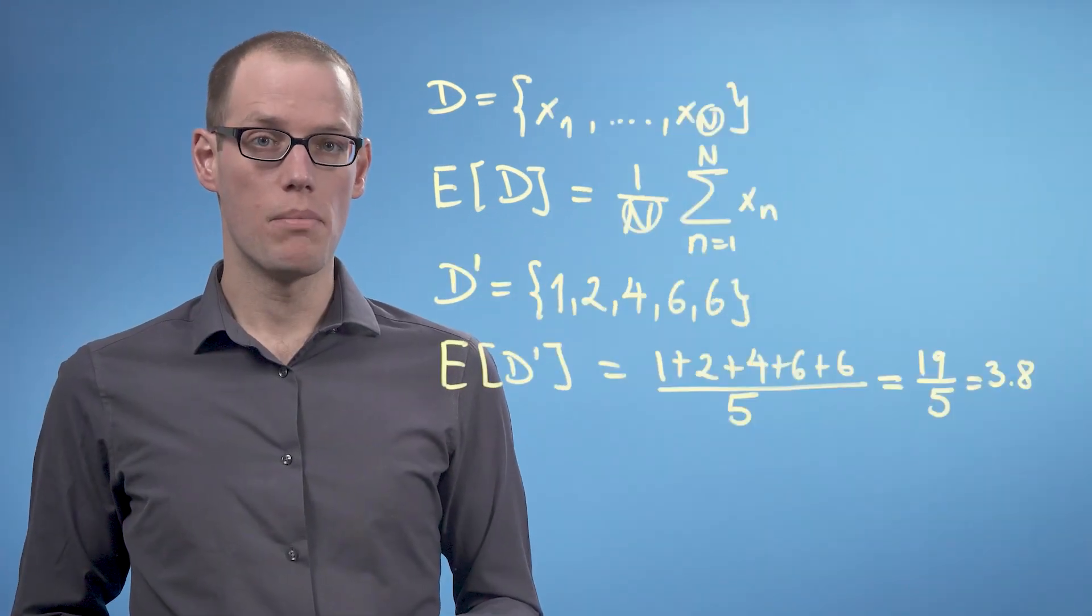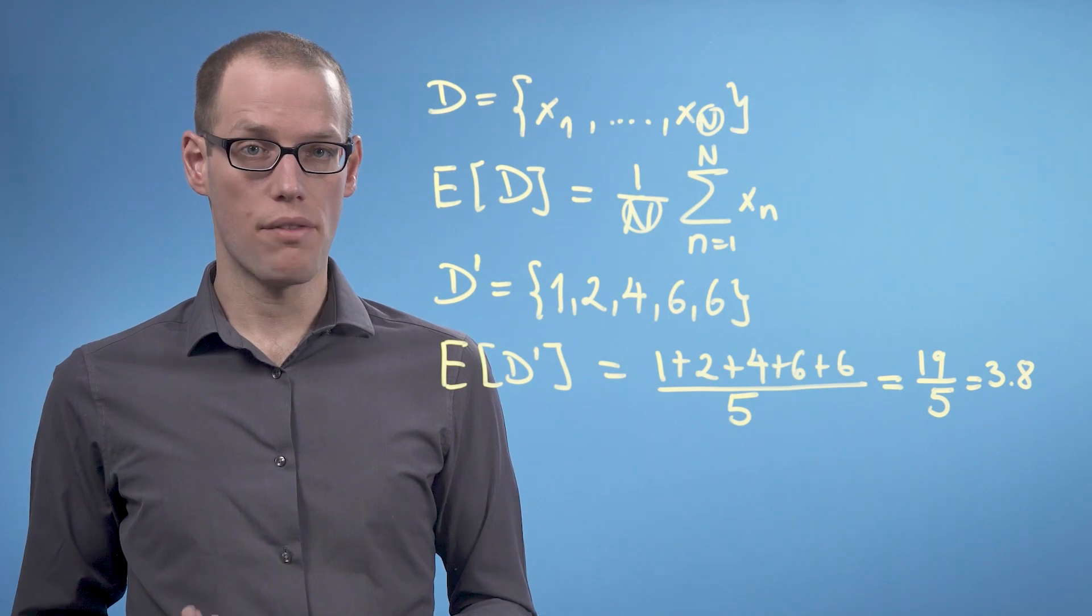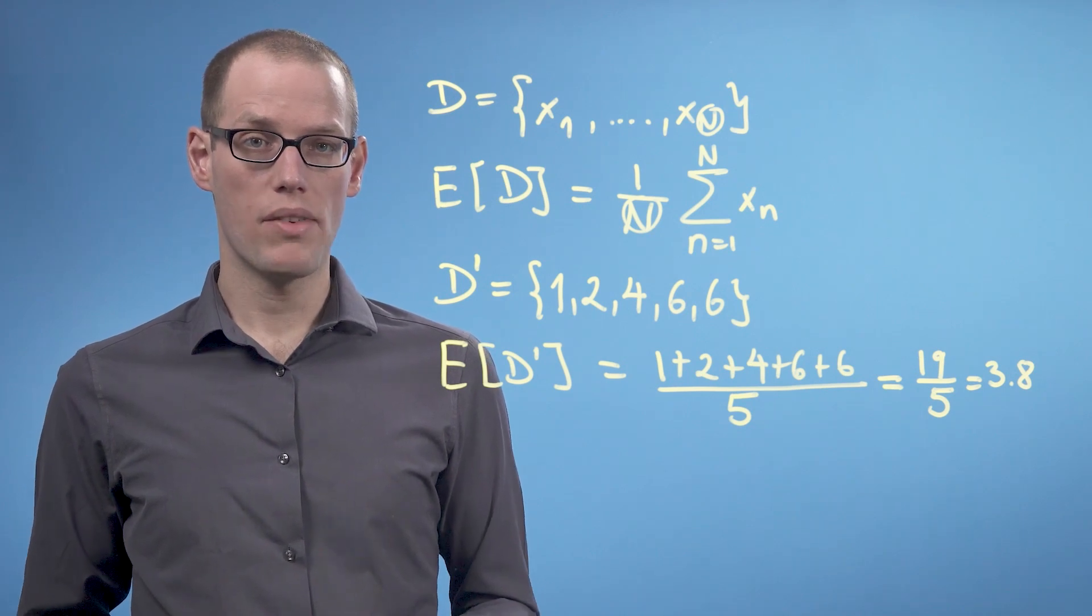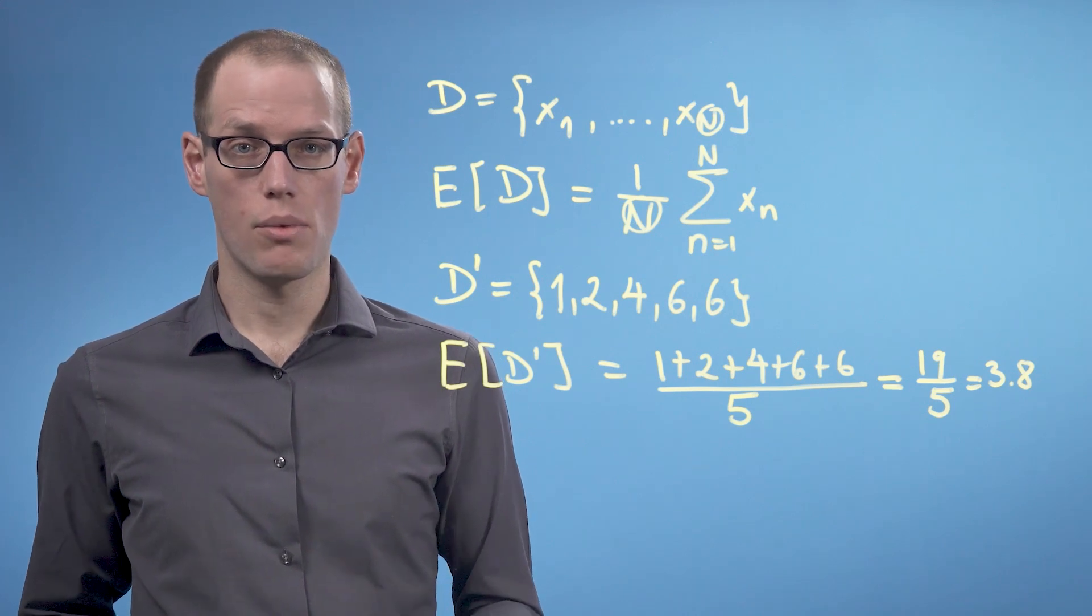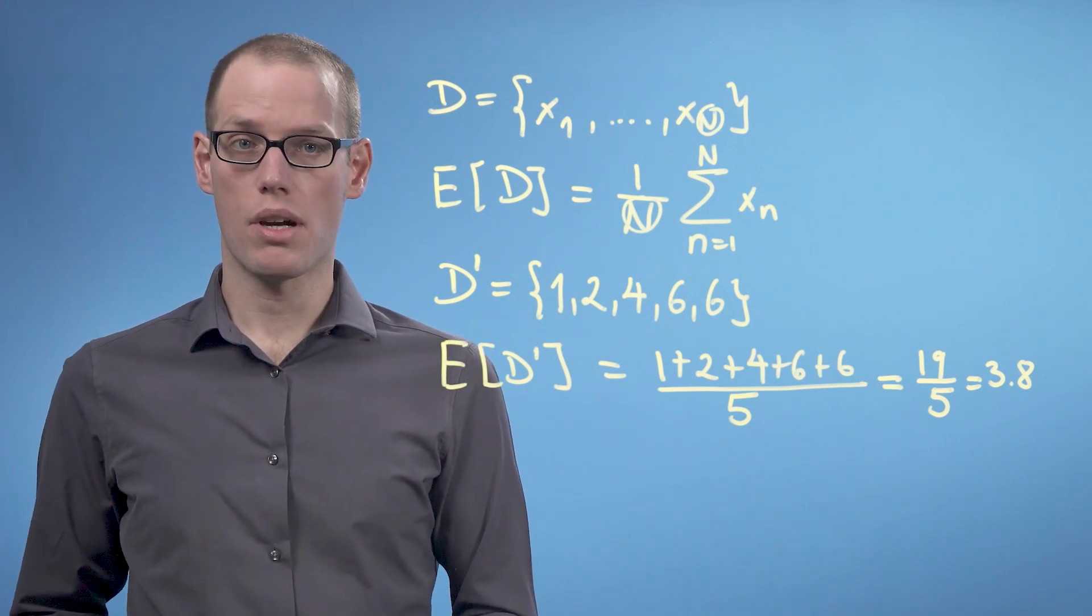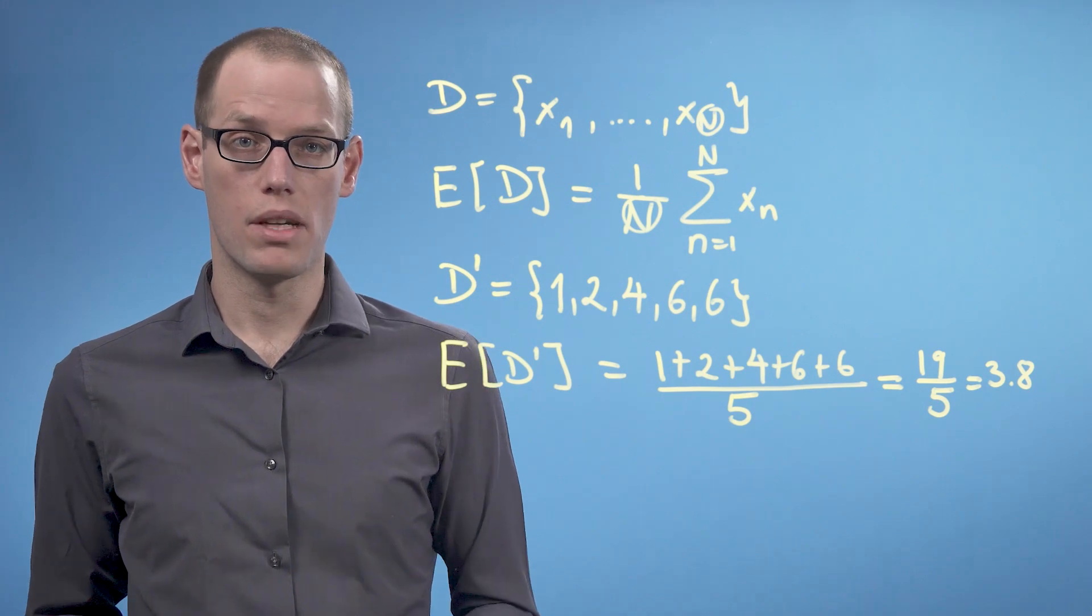In this video, we computed the mean value of datasets as the average data point. The mean value doesn't have to be part of the dataset. In the next video, we'll introduce variances to describe the spread of the data around the mean value.